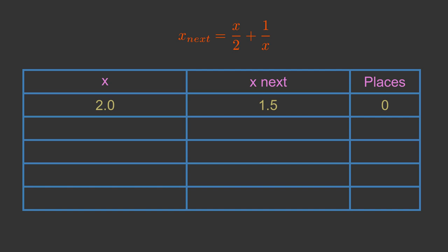We repeat the calculation with a new value for x. 1.5 over 2 plus 1 over 1.5 gives 1.416 recurring. We used this value previously as well. It is correct to 2 decimal places.